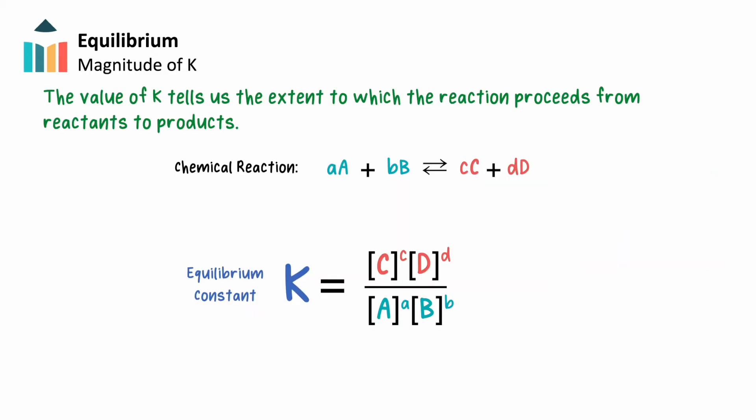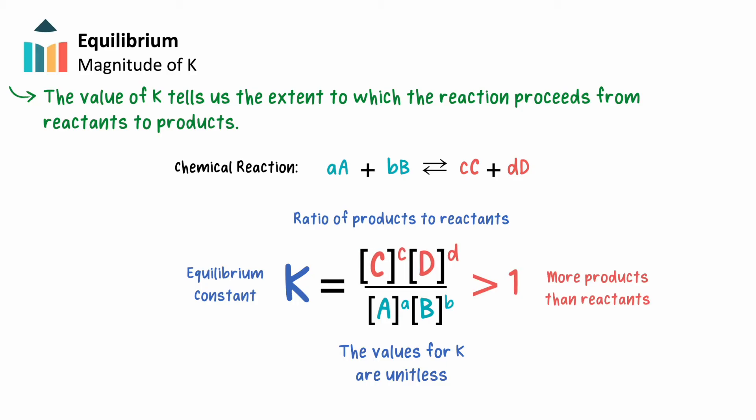The numerical value of K for a given reaction at a given temperature tells us the extent to which the reaction proceeds from reactants to products. The values for the equilibrium constant K are always unitless, so in a very general sense, K reflects the ratio of product concentrations to reactant concentrations. Therefore, if the value of K is larger than 1, this indicates there is more product, shown in the numerator, than reactant, shown in the denominator.